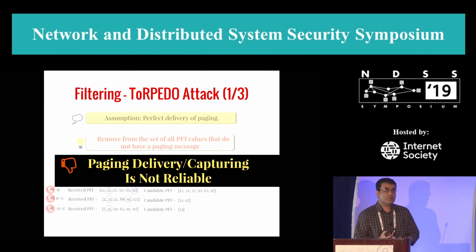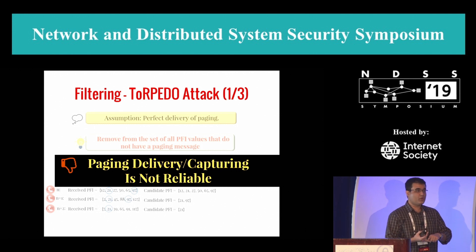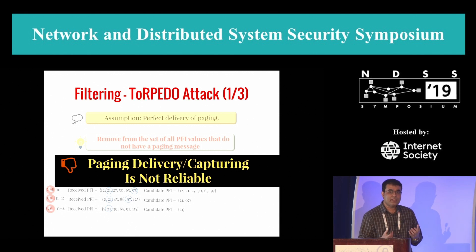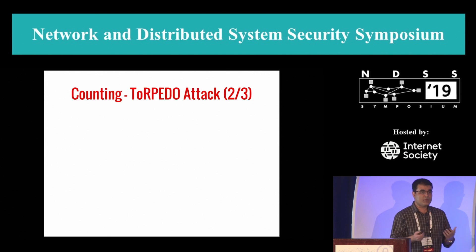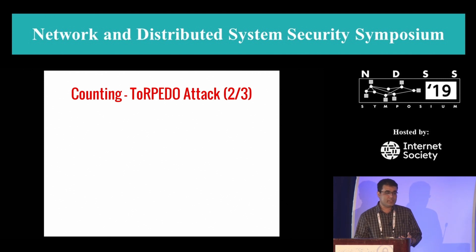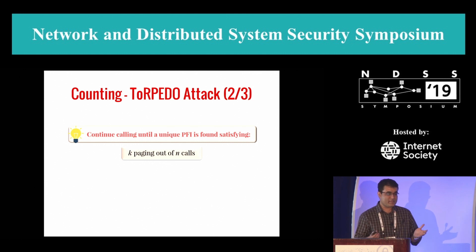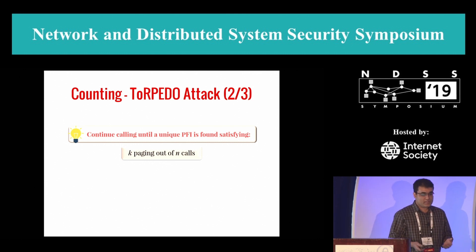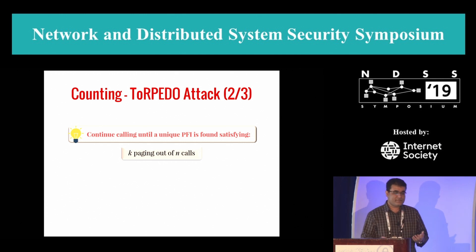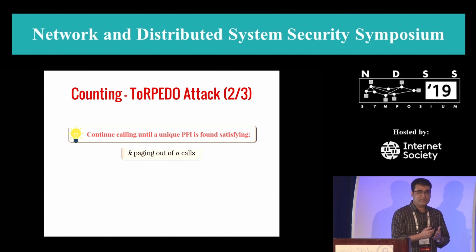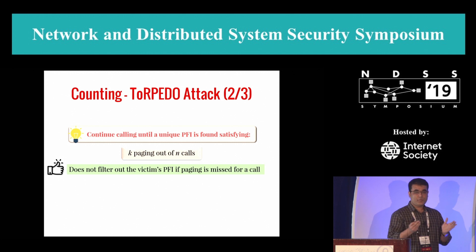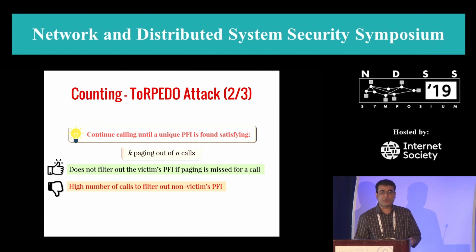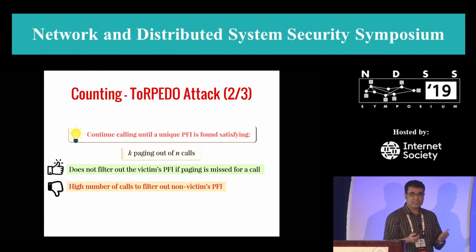To address these challenges, we propose our second approach: a counting-based approach. In this attack, we relax the constraints of the filtering-based approach. We continue making phone calls until a unique PFI is found satisfying the following condition: k paging messages out of n phone calls. While this doesn't prematurely discard the victim's PFI as filtering-based approaches might, the downside is that it still requires a higher number of phone calls to uniquely identify the victim's paging occasion.